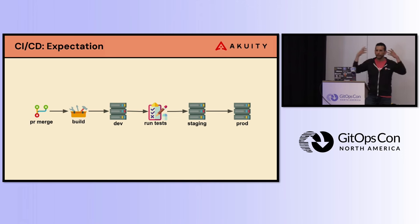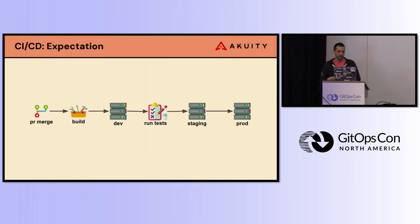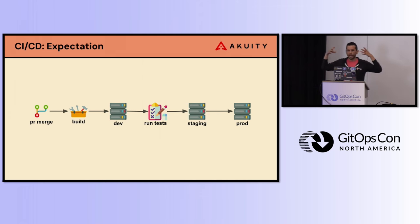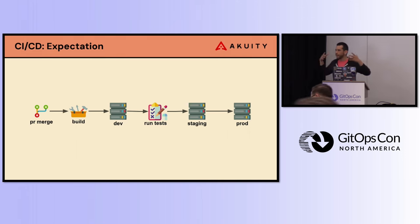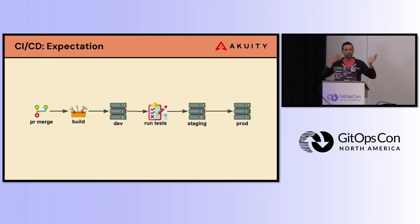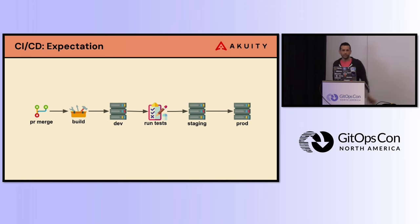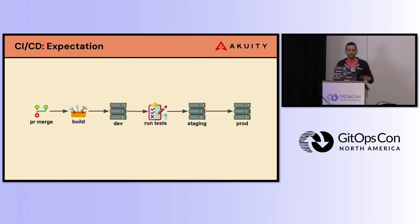When we think about pipelines and delivering software, this is kind of what we have in our minds. We think of this kind of linear process where an event happens, some sort of build happens, some sort of test happens, and things get promoted from one stage to another, one environment to the other environment.